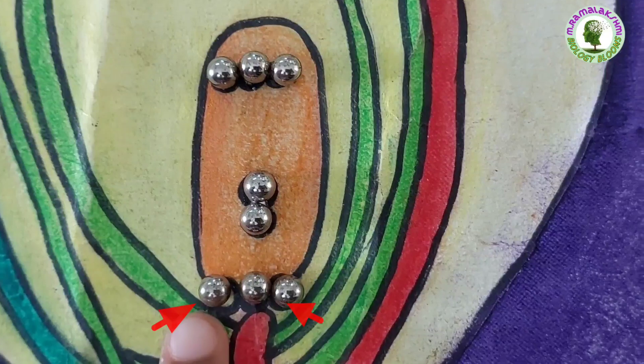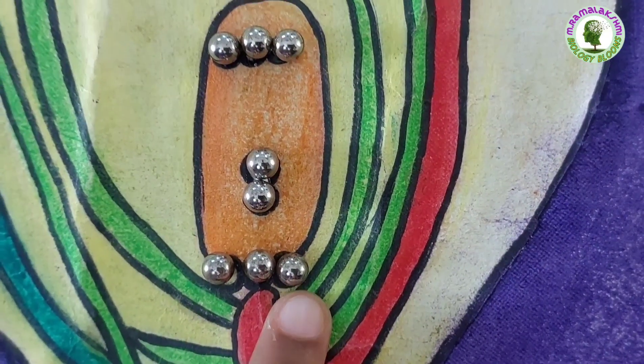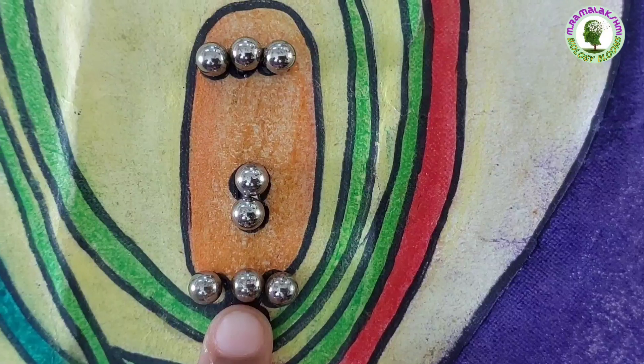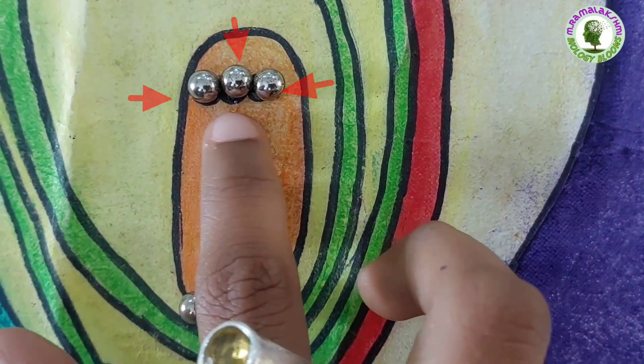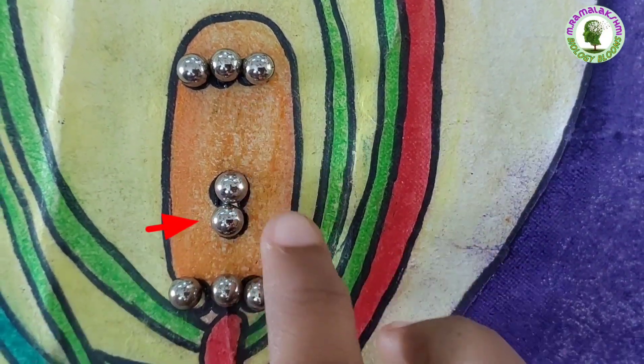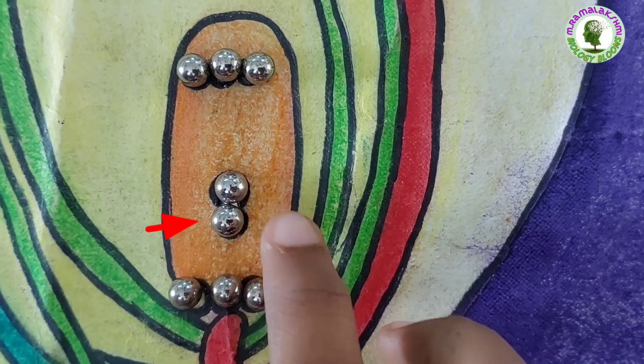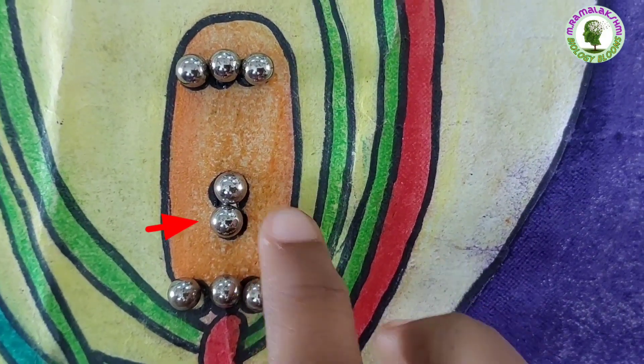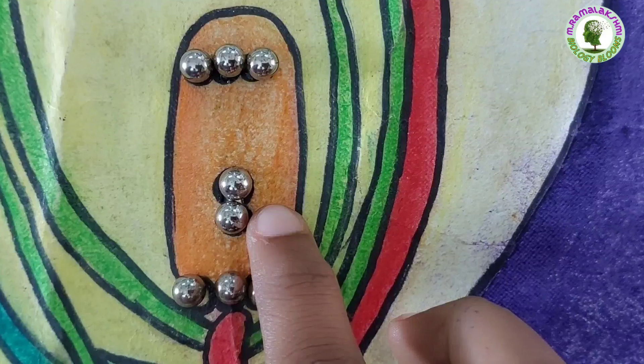These two are synergids and the middle one is the egg cell. These three are antipodals. This is the large central cell containing 2 nuclei. These are known as pollen nuclei.